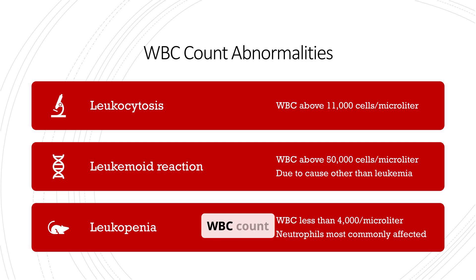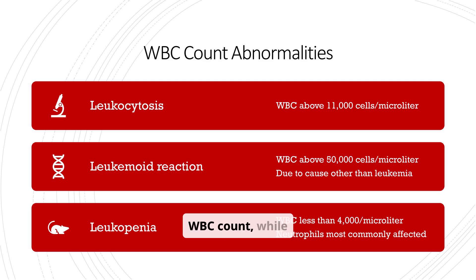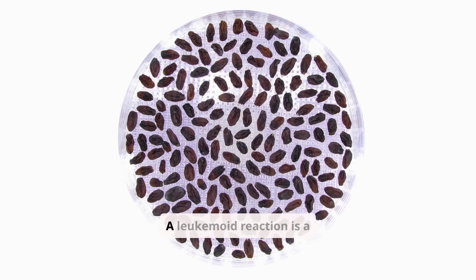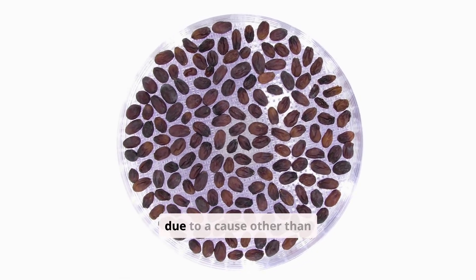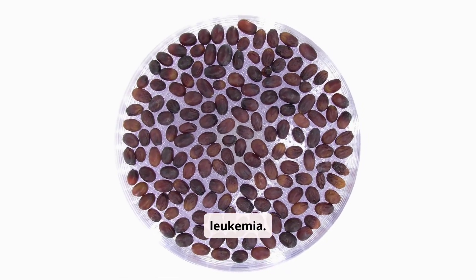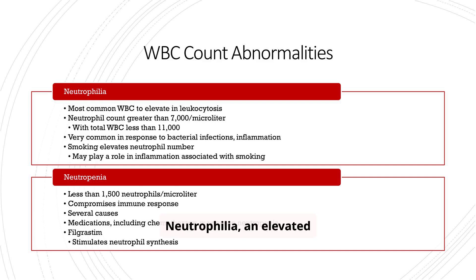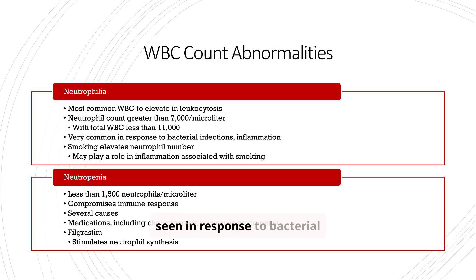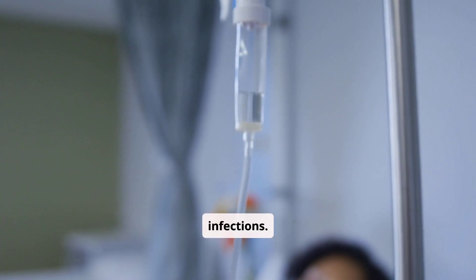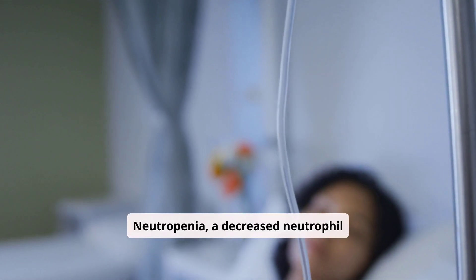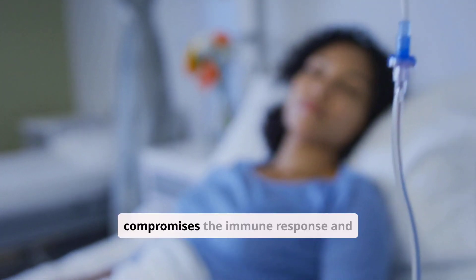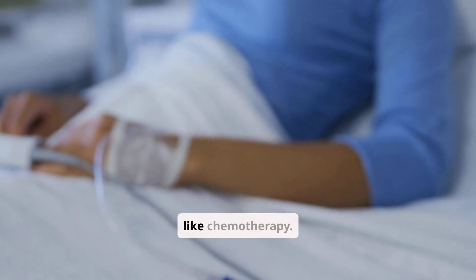Now let's discuss some WBC count abnormalities. Leukocytosis refers to an elevated WBC count, while leukopenia indicates a decreased count. A leukemoid reaction is a very high WBC count due to a cause other than leukemia. Neutrophilia, an elevated neutrophil count, is the most common WBC abnormality in leukocytosis, often seen in response to bacterial infections. Neutropenia, a decreased neutrophil count, compromises the immune response and can be caused by medications like chemotherapy.